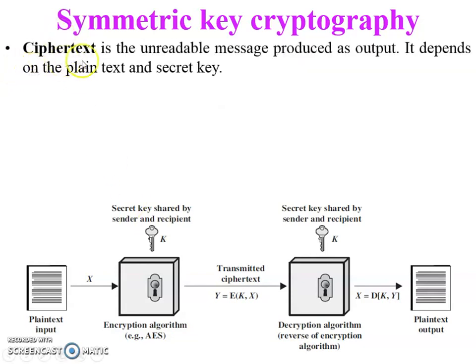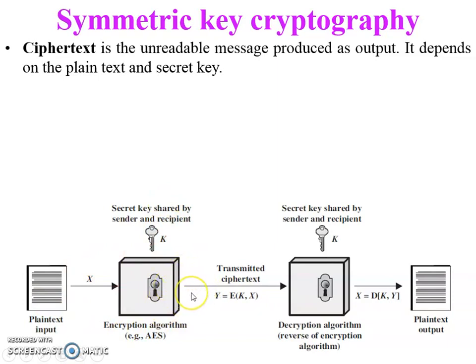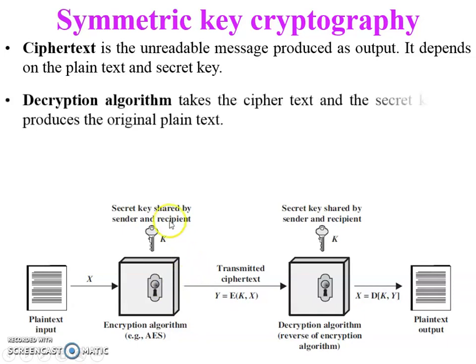The exact substitutions and transformations performed by the algorithm depend on the key. The encryption algorithm takes two inputs: the plain text (X) and the secret key (K). This secret key is shared only between sender and receiver. If any other person in the network accesses the key, they can decrypt the ciphertext into plain text.